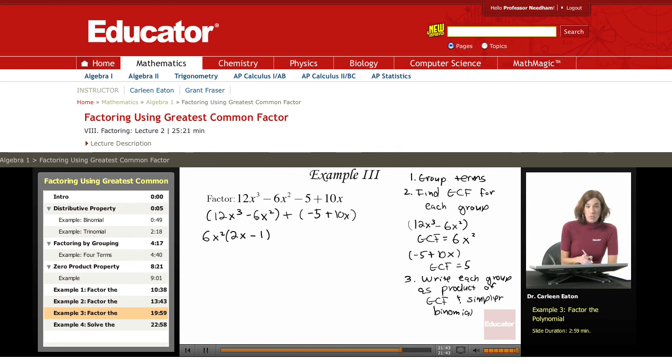because if I multiply 6x squared times 1, then I would get 6x squared back. For my second expression, I have greatest common factor of 5, which is going to leave me with a negative 1 plus 2x.